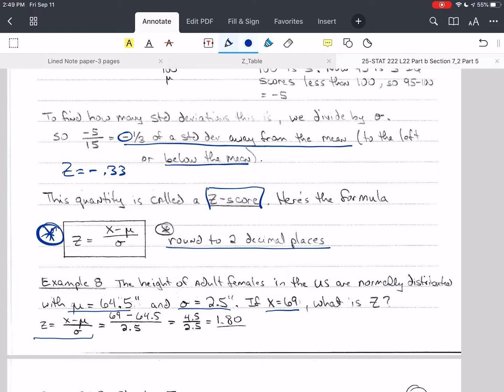So we write our formula. Always write your formula first, then plug in the values for this whole course. That's going to help you not make mistakes. So for x, we plugged in 69. That's the actual value of the person's height. And then mu was given as 64.5 right here. So we plug in for mu, 64.5.